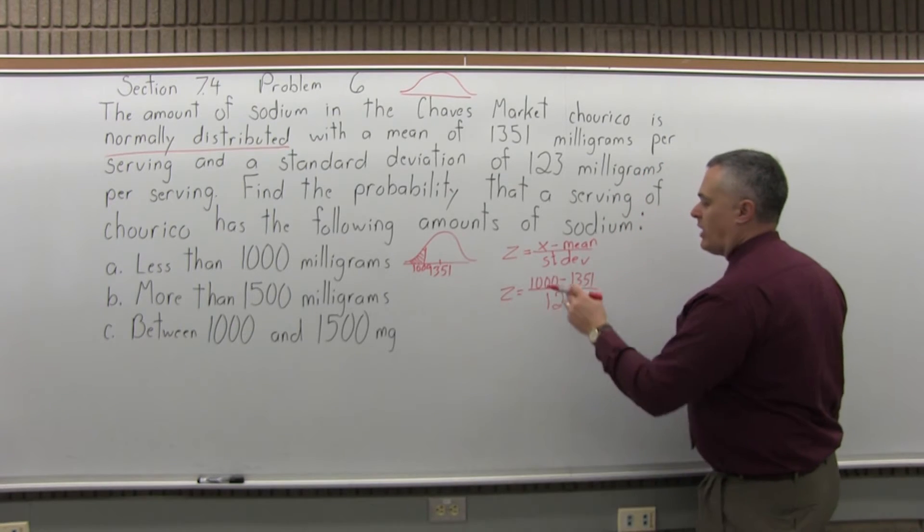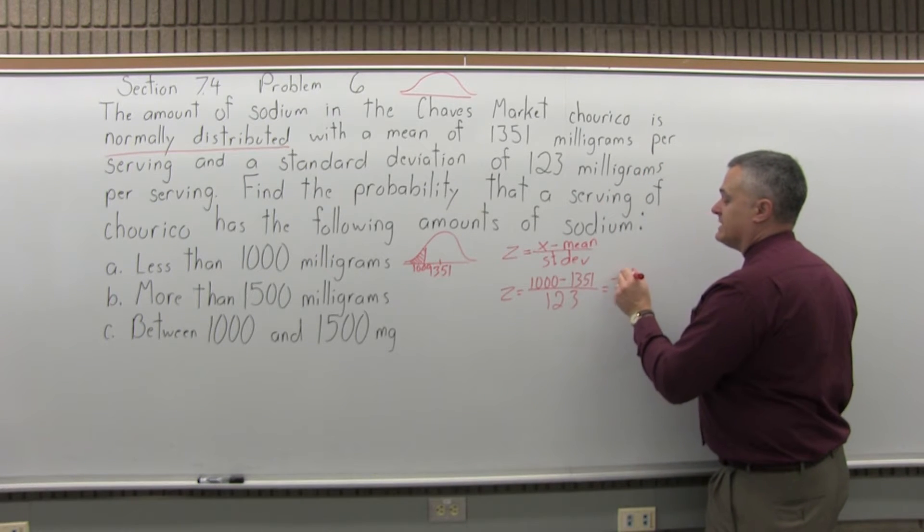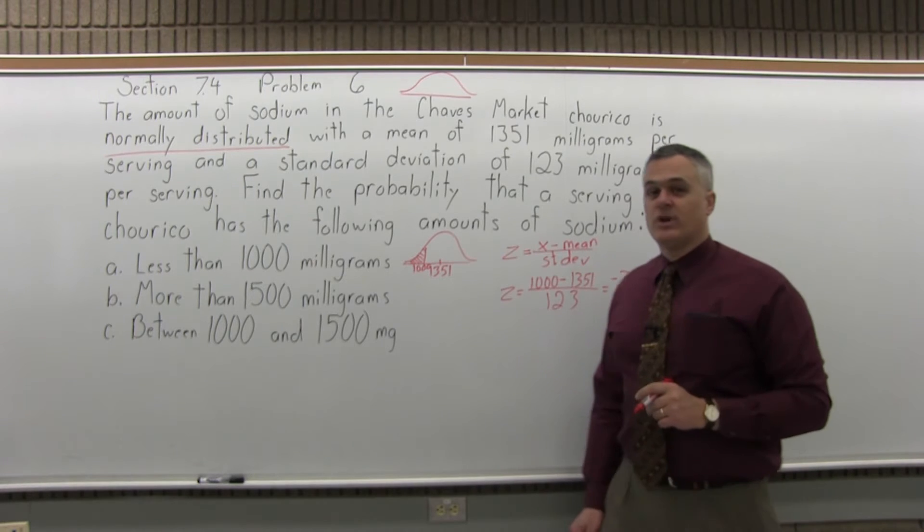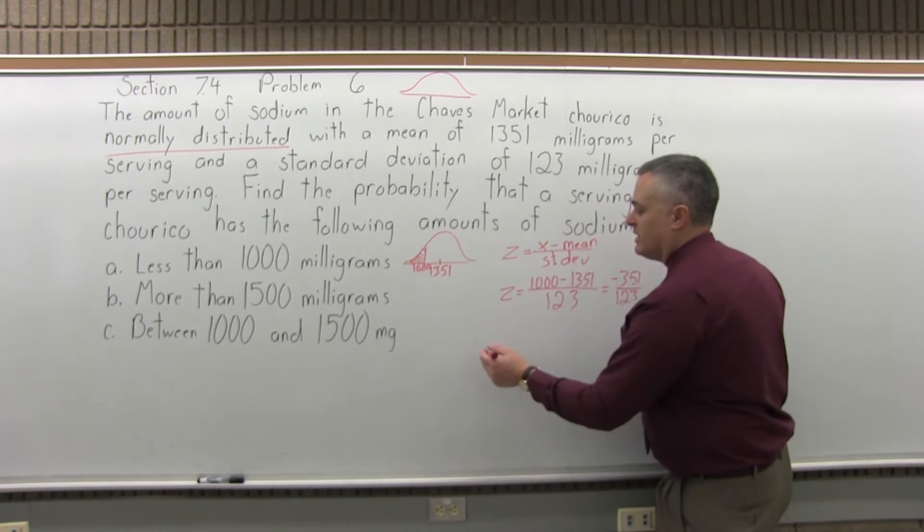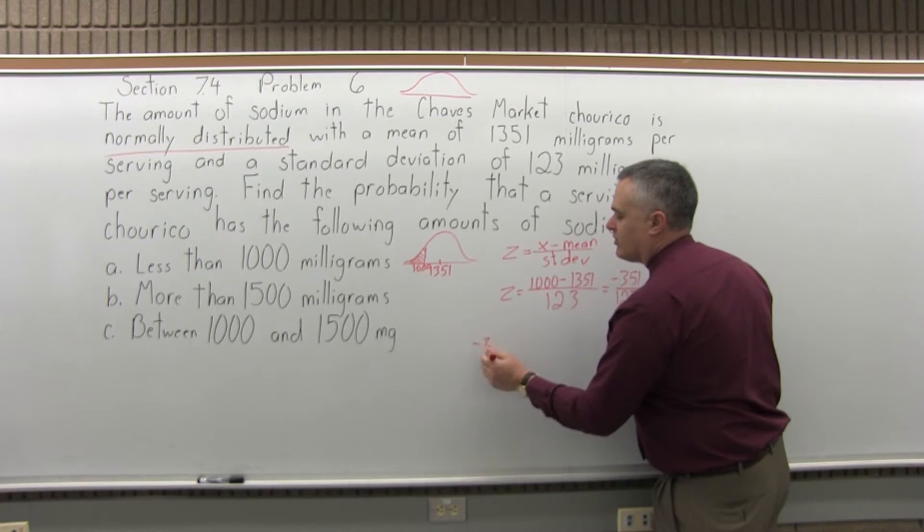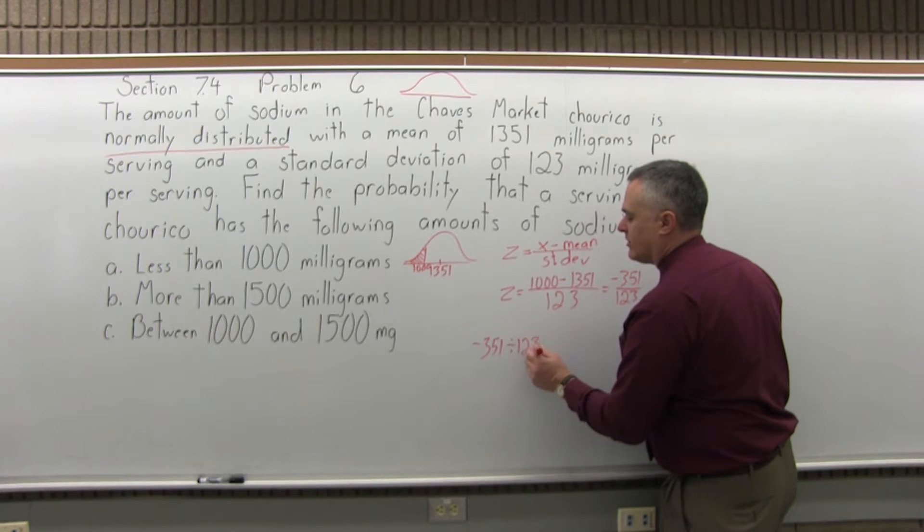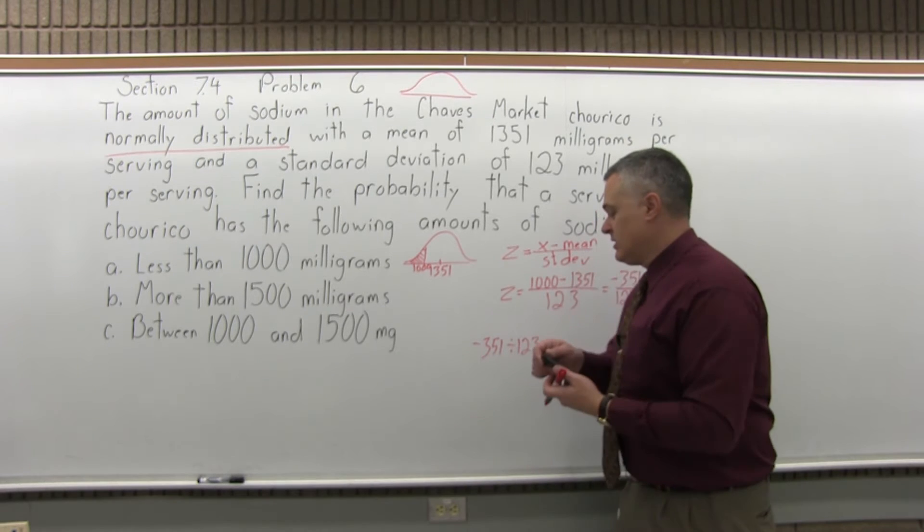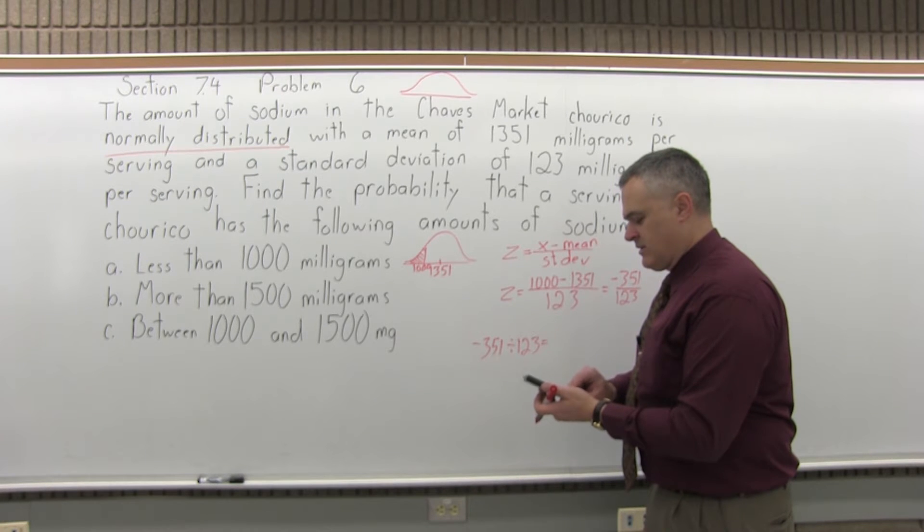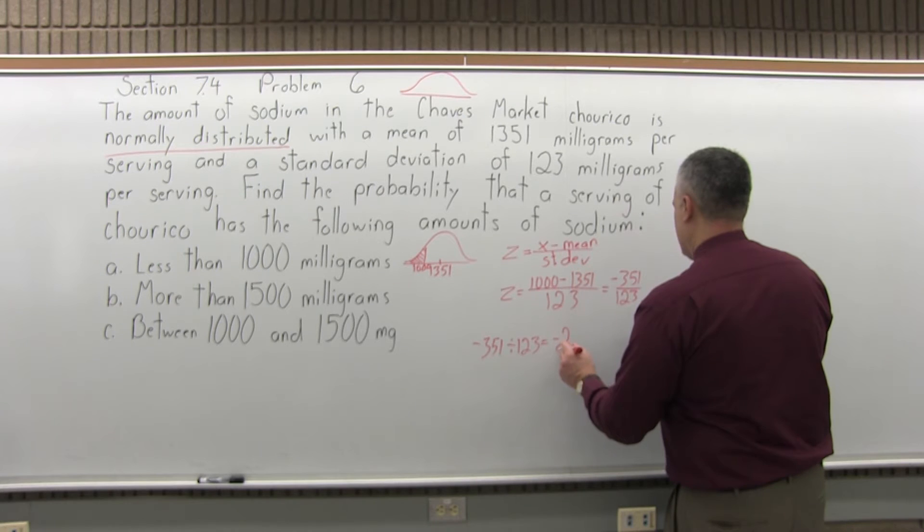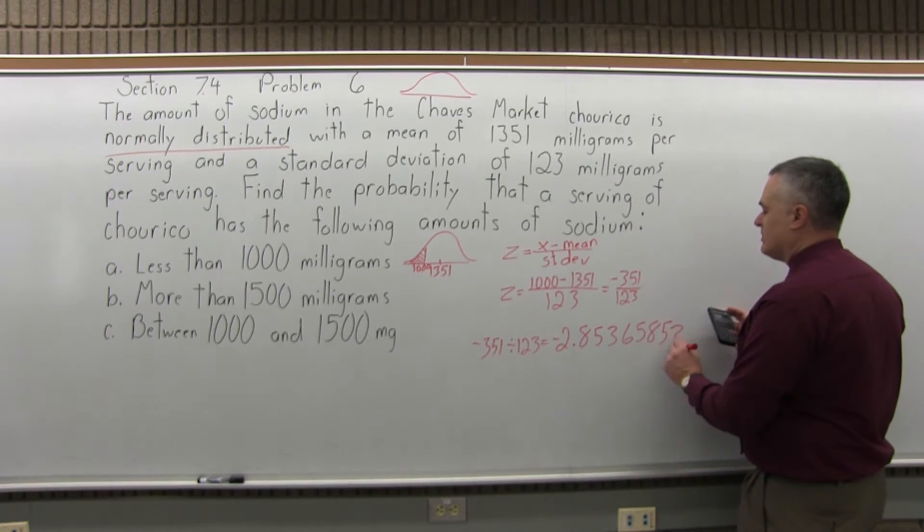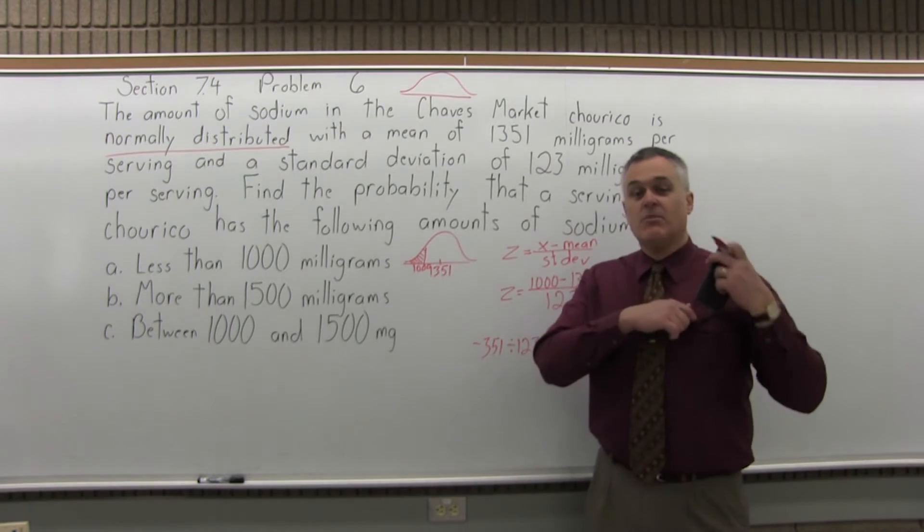On top, 1,000 minus 1,351 is negative 351. Pay attention to the sign. You're going to divide that by 123. So I will do negative 351 divided by 123, and the calculator says the answer is negative 2.853658537. I don't need that many digits, but that's the Z-score.